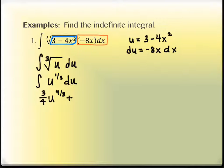I need a plus c and then I'm going to evaluate this at u = 3 - 4x². So I have (3/4)(3 - 4x²)^(4/3) + c.